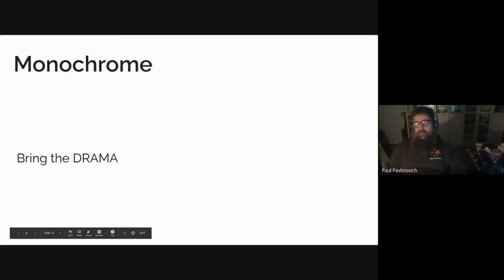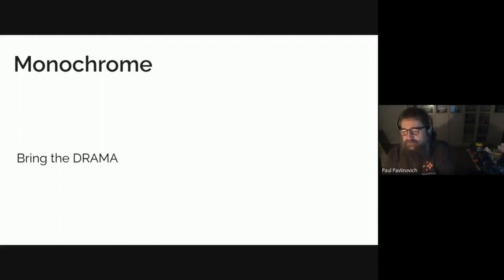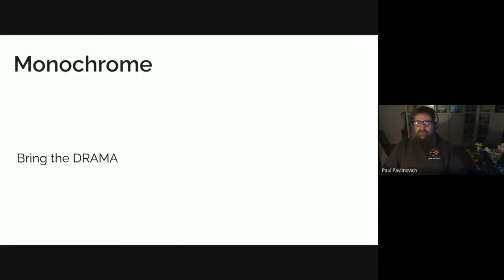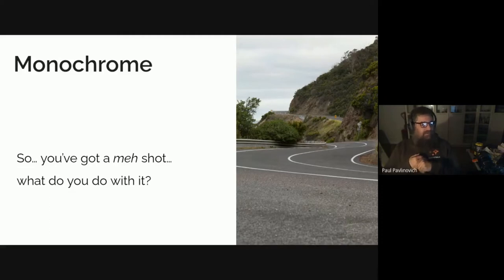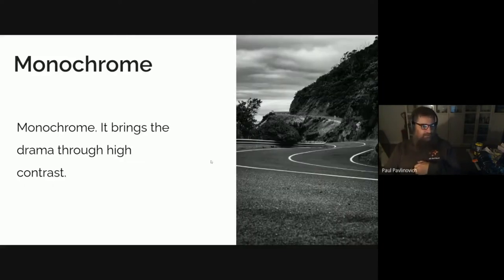I'm going to talk very briefly about monochrome images because they're not really appropriate for maps, so I won't get into too much detail. But on a lot of days where it's a bit hazy or overcast, the light can be a bit meh, so when you take your photos they don't look very interesting. This one, for example, is on the Great Ocean Road on the coast of Victoria. It's an absolutely beautiful place, but it doesn't look all that beautiful in this shot because the light's kind of crap. But the composition I really liked, so I changed it a little bit and used monochrome.